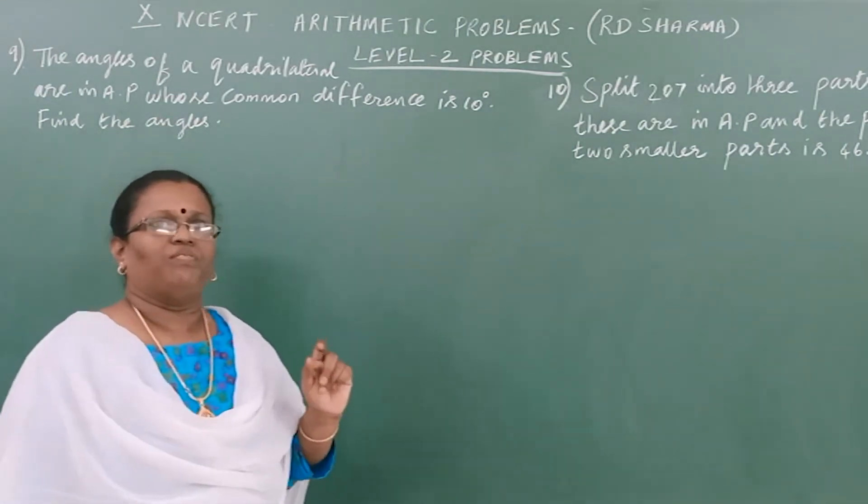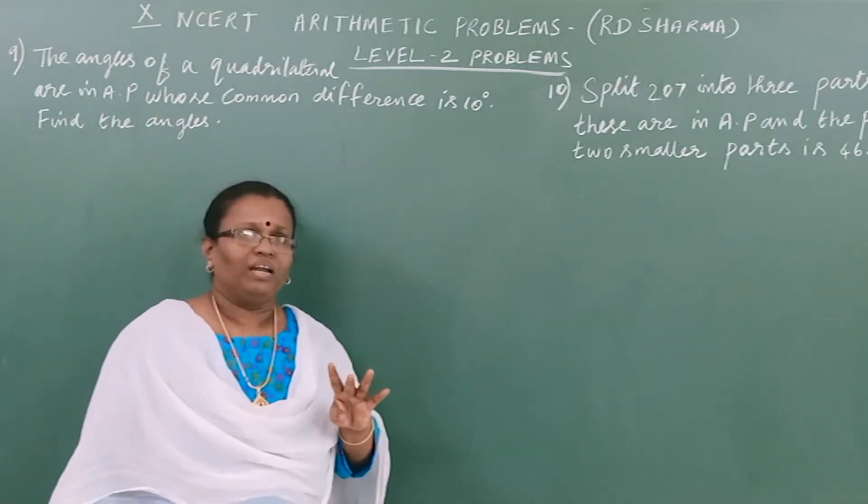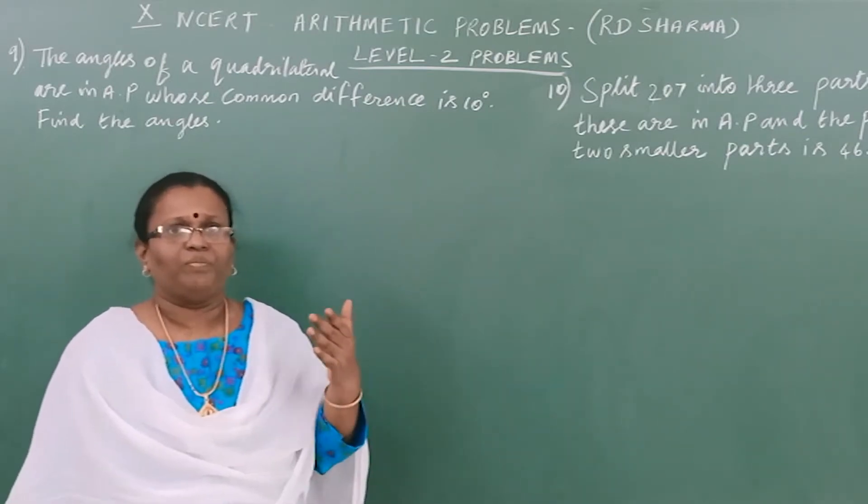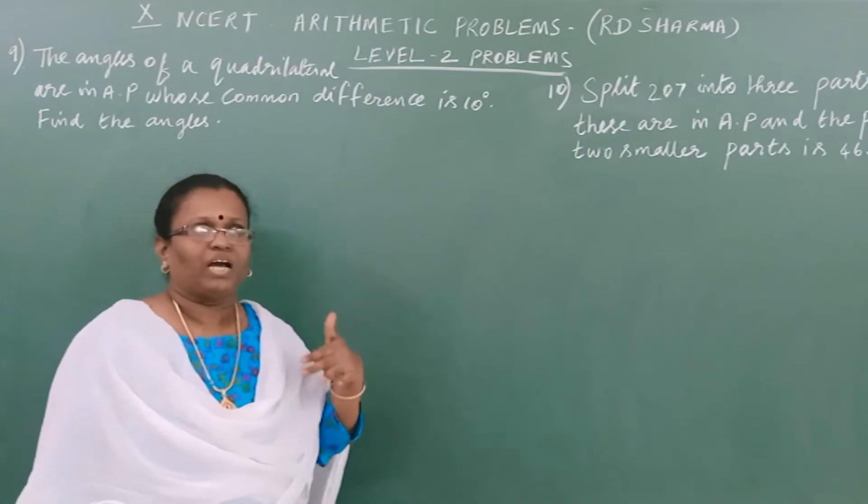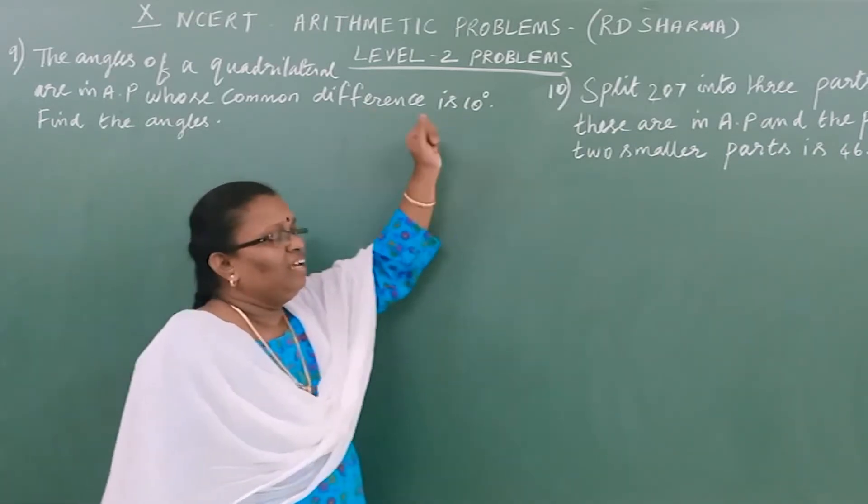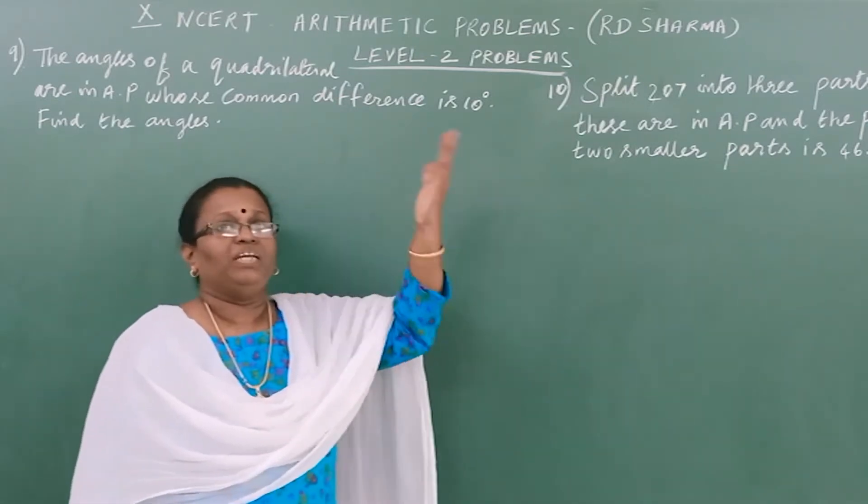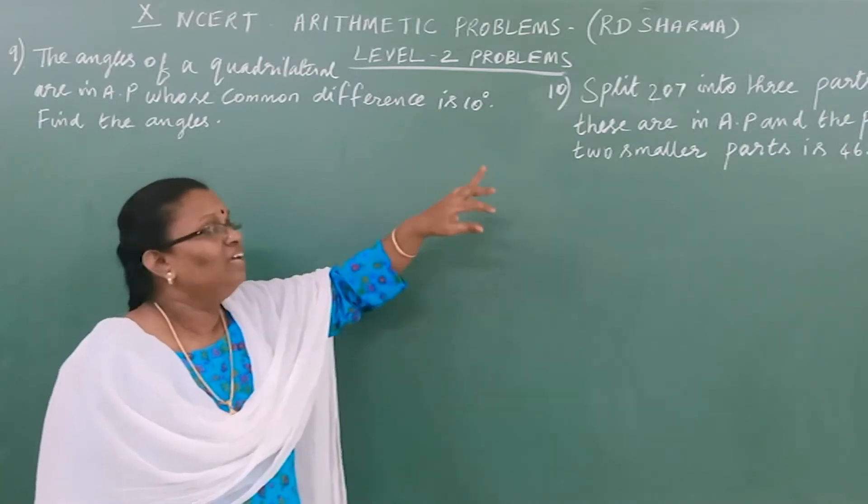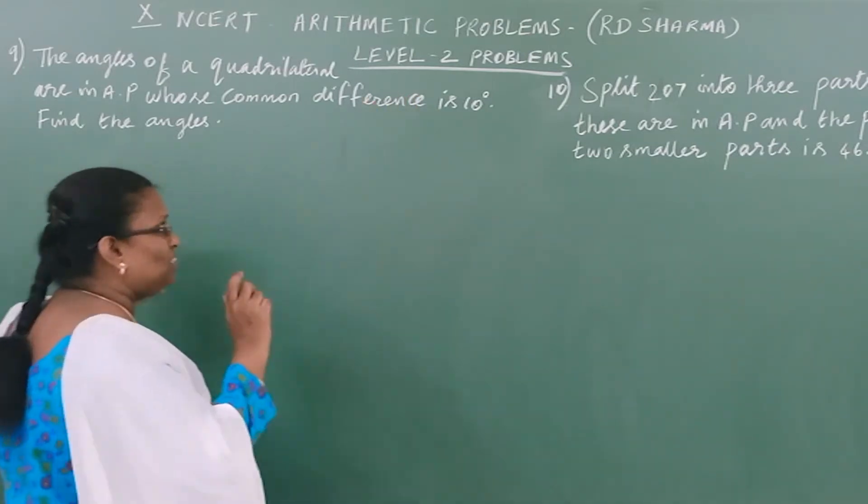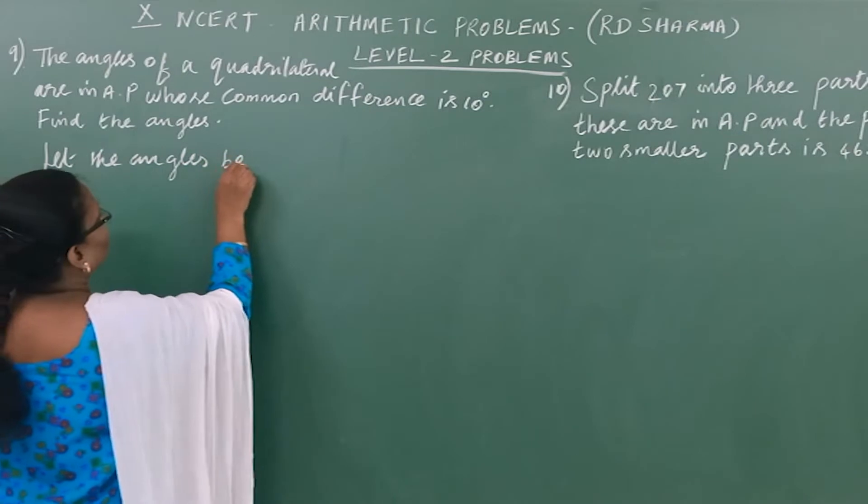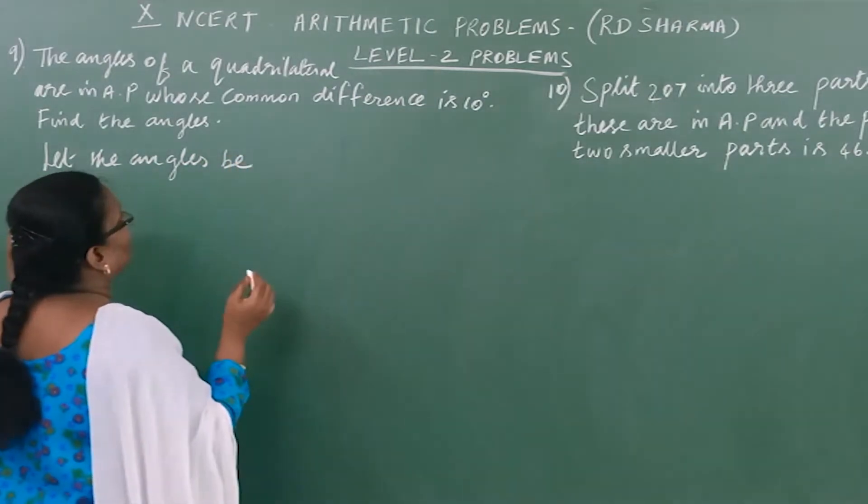This creates some confusion. We have four terms: A, A+D, A+2D, and A+3D. But in the problem, the common difference is 10, so this is the general form of the problem. Let the angles be in general terms.